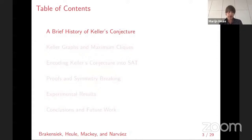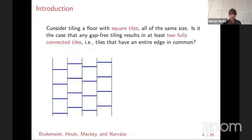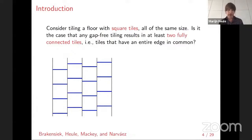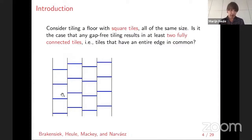First, a brief history of Keller's conjecture. Keller's conjecture is about tiling. Consider an easy case: we have the entire two-dimensional space, or for example a floor, that we want to tile with square tiles, all tiles the same size. The question is: if you have a gap-free tiling, is it always the case that two tiles are fully connected — that is, sharing a full edge? If you think about it, you come to the conclusion that there is essentially one way of tiling: you have lanes with tiles in the same lane, and the lanes can be arbitrarily shifted from each other, but two consecutive tiles in a lane share a fully shared edge.